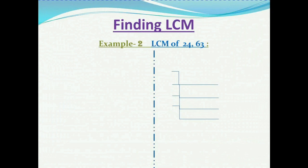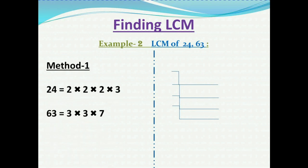Next we see one more example with slightly larger numbers: the LCM of 24 and 63. We have learned two methods; first we apply the prime factorization method. 24 can be written as 2 × 2 × 2 × 3, and 63 can be written as 3 × 3 × 7. These are the prime factorization forms of 24 and 63.